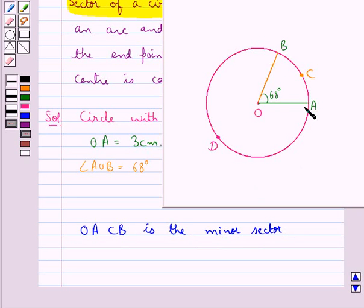So, this ADB is the major arc of the circle and hence, OADB is the major sector of the circle.